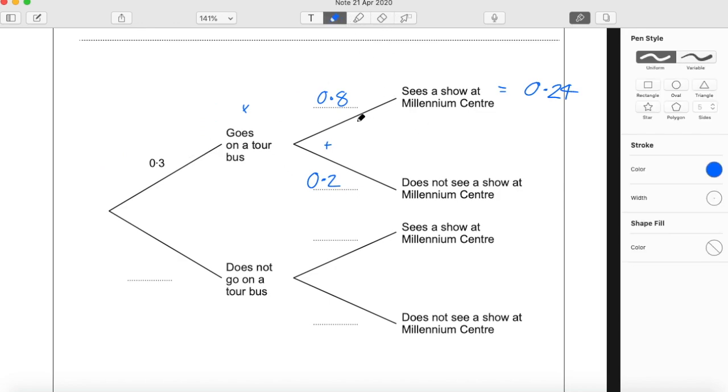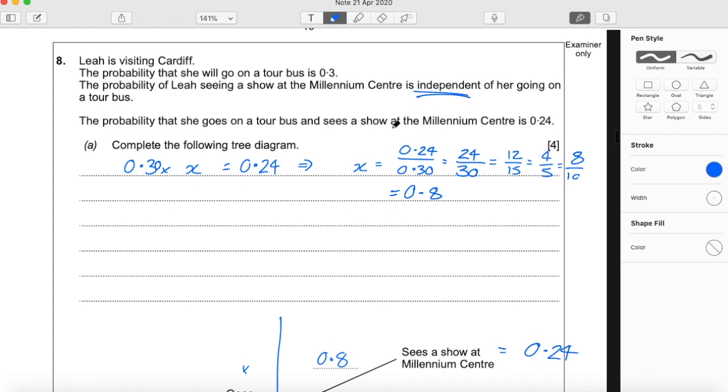We were told that these were independent events, so the probability of her doing one does not affect the probability of her doing the other. So these will remain the same probabilities. And this is just 0.7. So doing one or the other or possibly even a third thing, the probabilities of each of those always add up to 1. The probability of her doing one times by the other independent event equals this probability. This probability plus this probability needs to equal 1. And as I said before, seeing the show at the Millennium Centre or not seeing the show is an independent event to whether she goes on the bus tour or not. So regardless of what she does here, that will not affect the probability of what she does here because we were told that they are independent. So that's part A.